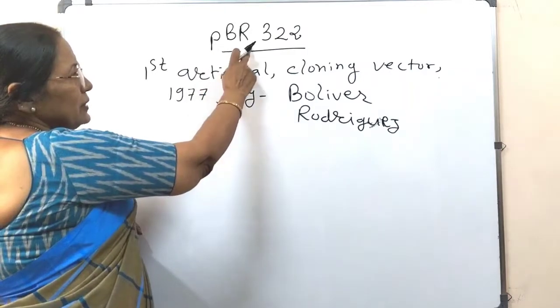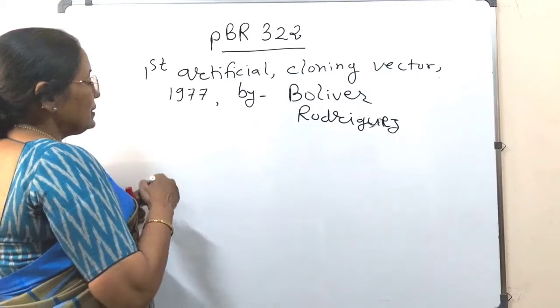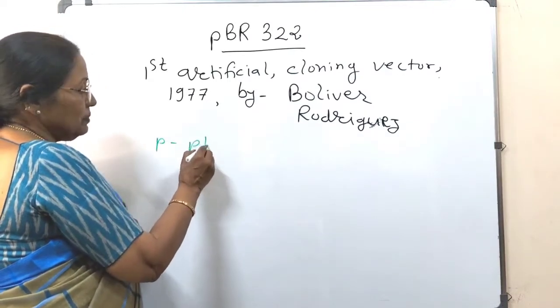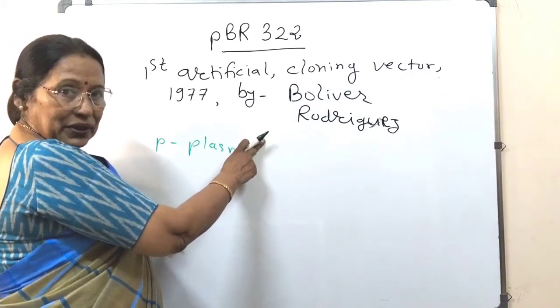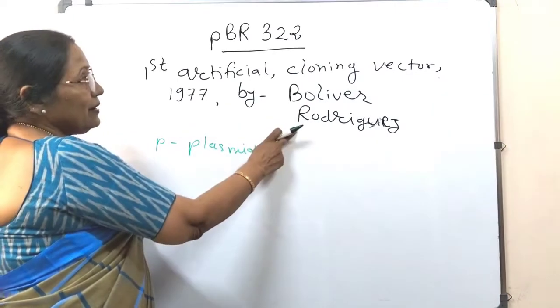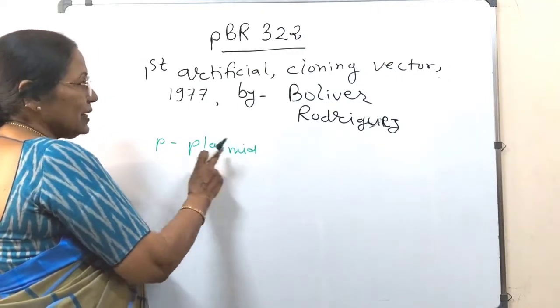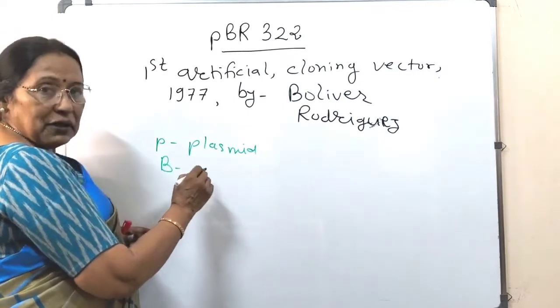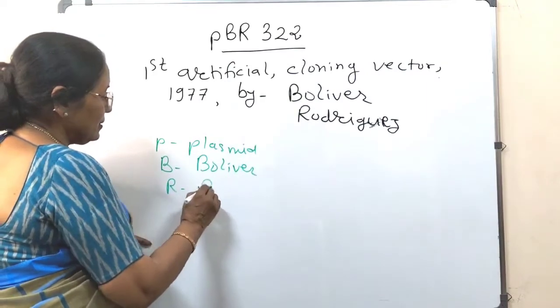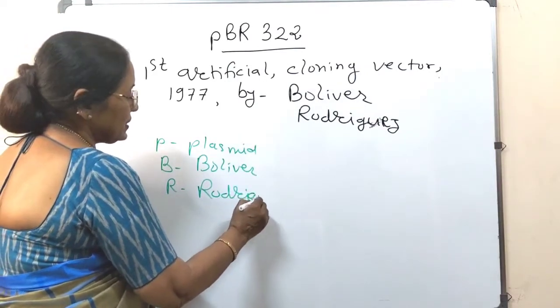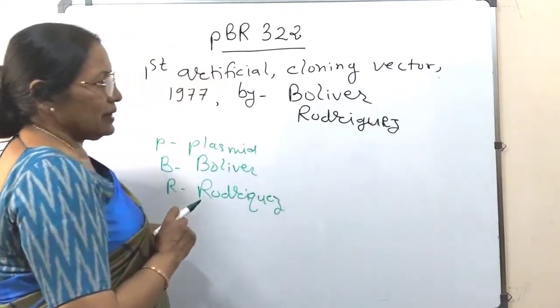In this name PBR 322, the P stands for plasmid, because while preparing this artificial cloning vector, they had taken the plasmid of E.coli. So P stands for plasmid, B of course for Bolivar and R for Rodriguez. Yes, it is correct.